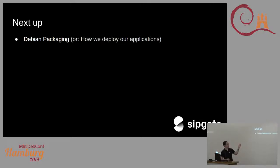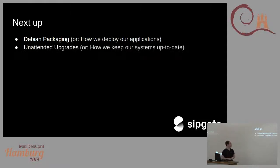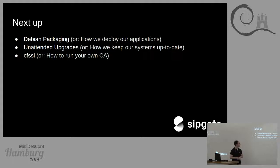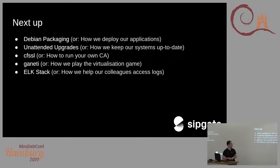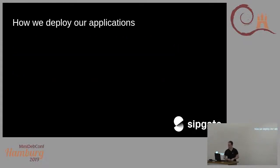First, I'm going to give a short introduction to how we use Debian packaging internally. Then how we do unattended upgrades, how we built our own internal certificate authority and why, how we use Ganeti as our virtualization platform — which is present in Debian as well — and how we use the ELK stack. We might run out of time, and if that happens we'll skip the ELK stack and offer it as a lightning talk tomorrow.